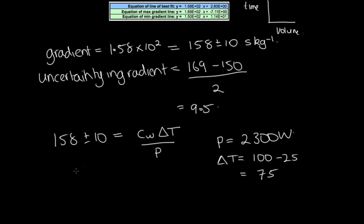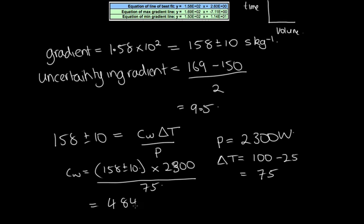So we have that Cw is equal to 158 plus or minus 10 times this power, which is the 2,300, over the change in temperature, which is the 75. So we do this times 2,300 and divided by 75, to both the value and the uncertainty. So this gives us 4,845 plus or minus 307. And this is joules per kilogram per Kelvin.